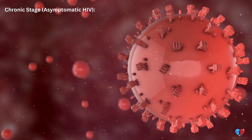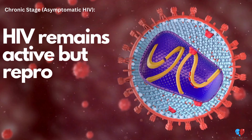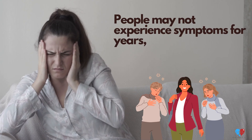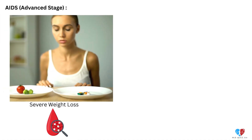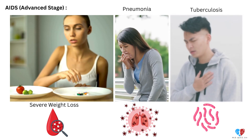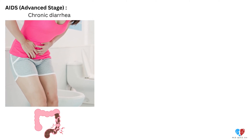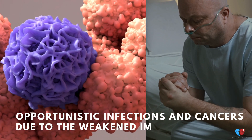Chronic stage — asymptomatic HIV. HIV remains active but reproduces at low levels. People may not experience symptoms for years, but the virus continues to damage the immune system. AIDS, advanced stage: severe weight loss, frequent infections such as pneumonia and tuberculosis, chronic diarrhea, night sweats, severe fatigue, and opportunistic infections and cancers due to the weakened immune system.